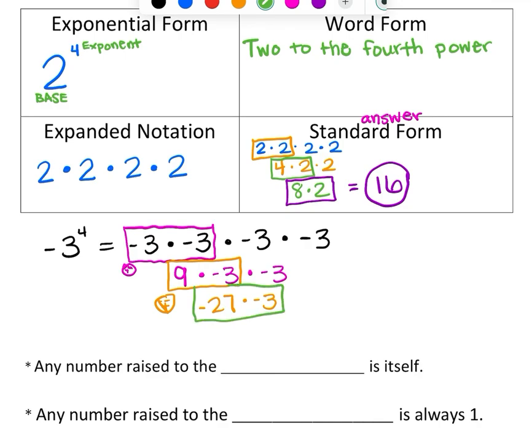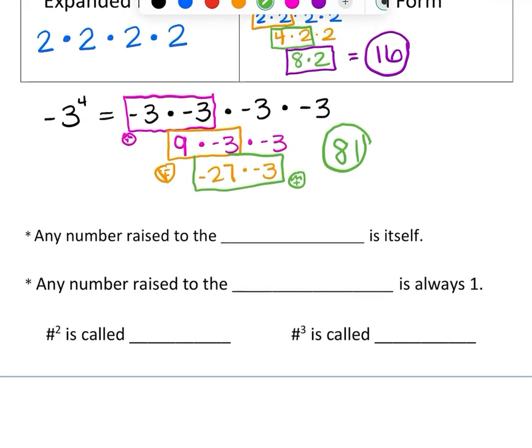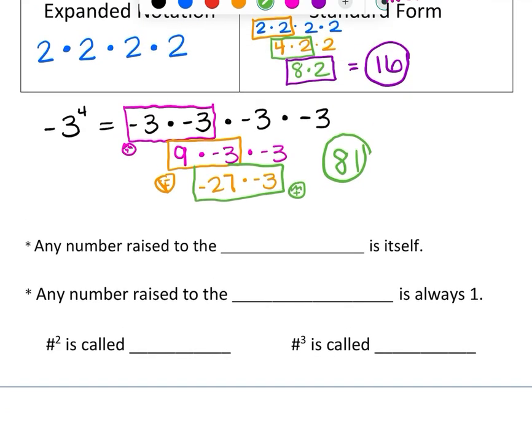And then if I solve that, 27 times 3 is 81. And then I need one last integer man. So two negatives makes a positive. So positive 81. So notice I had three steps. So I had three integer mans on that problem. And then lastly down here, these are just some fun facts.